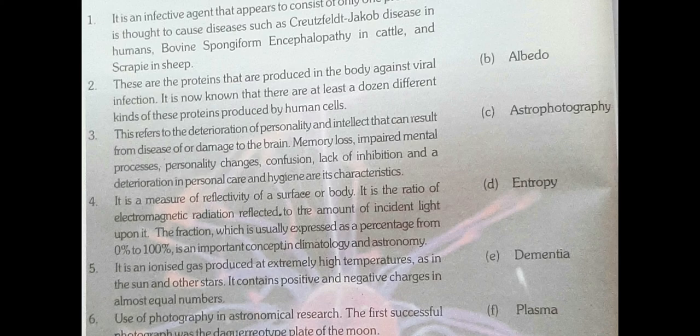Dementia refers to the deterioration of personality and intellect that can result from disease or damage to the brain. Memory loss, impaired mental deterioration, personality changes, confusion, lack of inhibition, and deterioration in personal care and hygiene are its characteristics. It means the person suffering from dementia is not able to think properly.